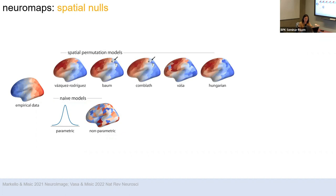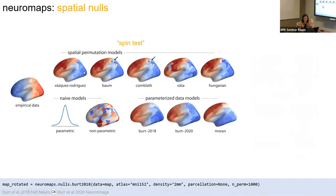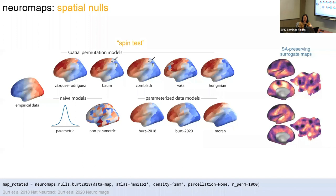Here are examples of spatial null models called spin tests. We take our empirical data, project it onto the sphere — just like we did for multimodal surface matching in the transforms — spin that sphere, and then project it back down onto the surface. Your brain map is now wrong in the null model, representing something different, but the parcels' neighbors are the same: parcels that were red are still next to other red parcels, blue ones are still next to blue ones. There's another version: parametrized or generative data models, where you estimate the spatial autocorrelations of your data and create new data from that.